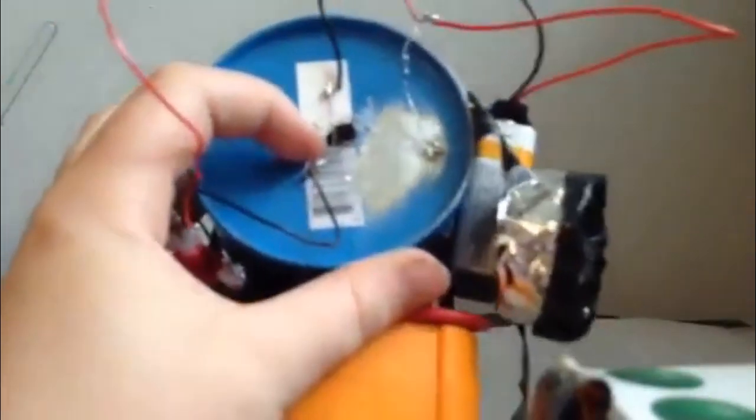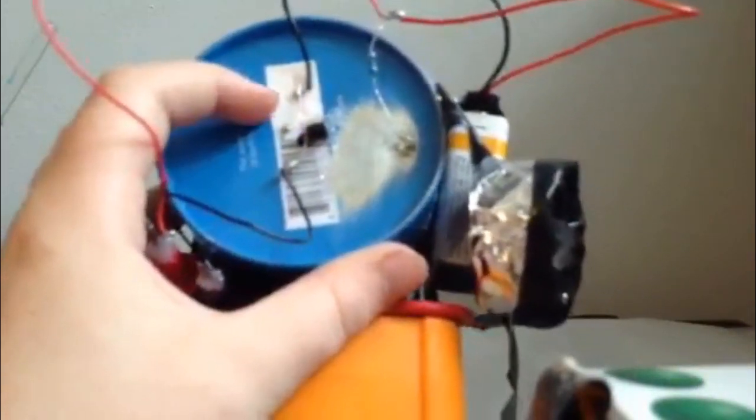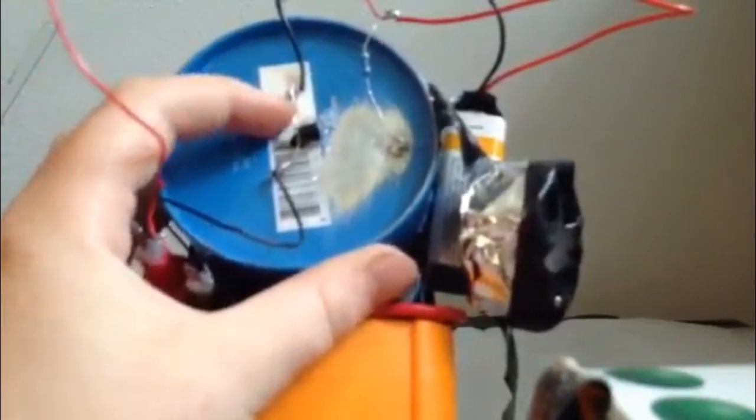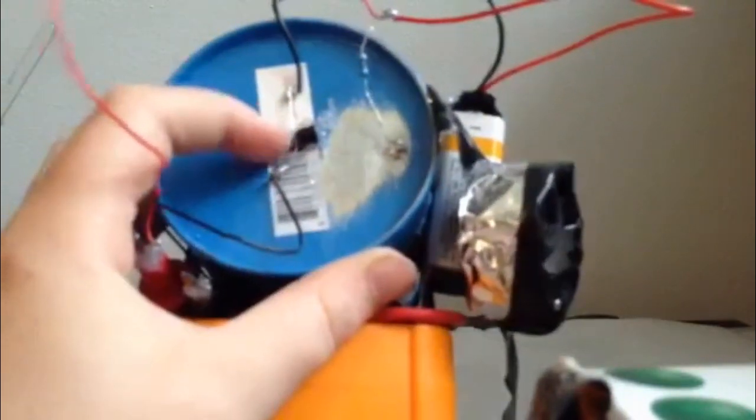First make a hole in the middle of the bottom of the can. Then put the base pin of the transistor through the hole of the can, making sure that the transistor's pins do not touch the can.